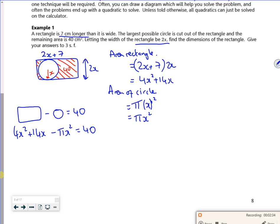Now it might look like quite a messy quadratic there, but we have got a quadratic. So if you look, I've got a 4x² and I've got a minus πx². And then I've got my 14x, and then I've got my minus 40 as equal to zero. So to make it look a little bit easier, if I take out the x squared as a factor. So now I've got a quadratic which I can solve.